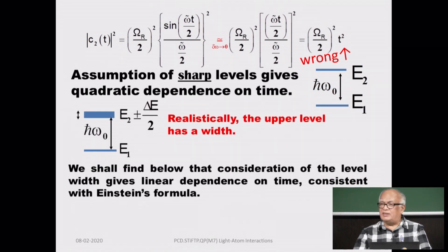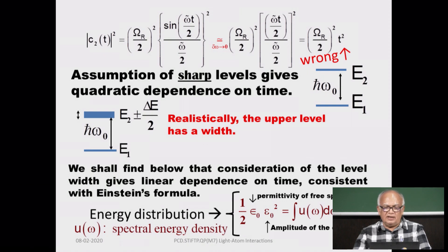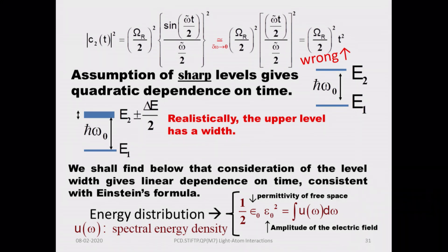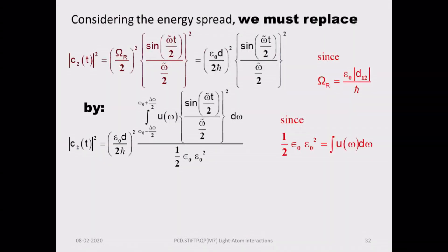We need to fix this, and to do that we have to consider the energy width of the excited state. We must consider this energy distribution — we already have the spectral energy density — so when you integrate that, you get the energy. We need to make a correction for this term and see what we get when we introduce it.